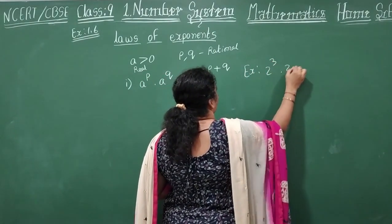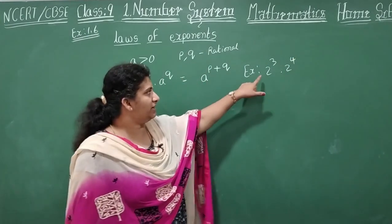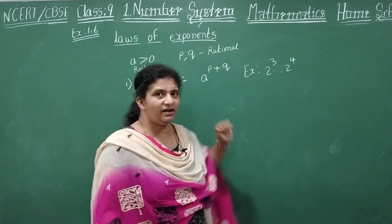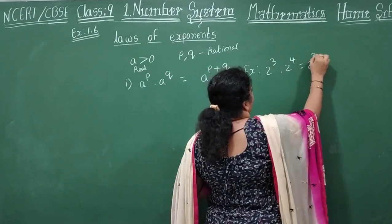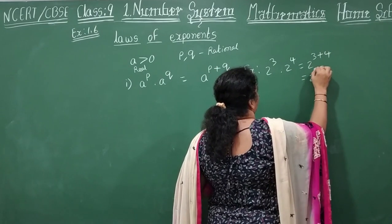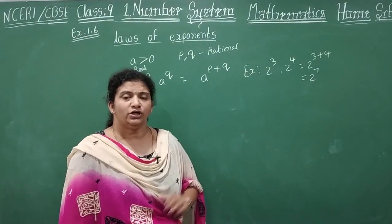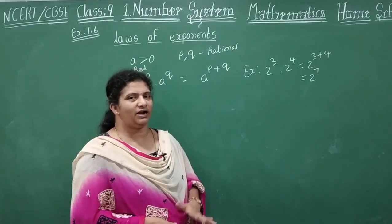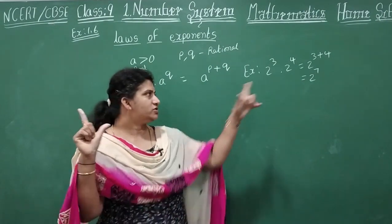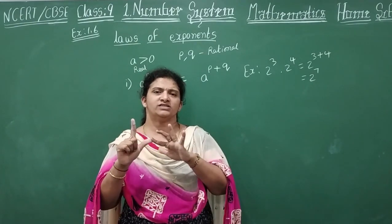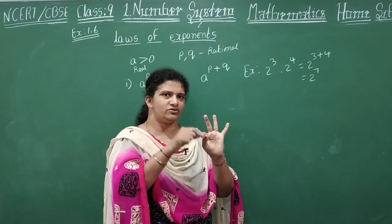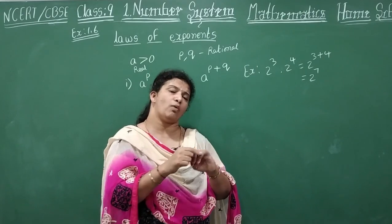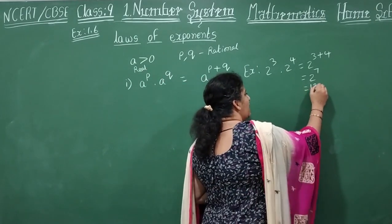Let's see one example for this law: 2 power 3 into 2 power 4. The base is 2 in both — bases are same, so powers are added. You rewrite this as 2 power 3 plus 4, that will be 2 power 7. What is 2 power 7? 2 is multiplied 7 times: 2, 4, 8, 16, 32, 64, 128. This is your answer.